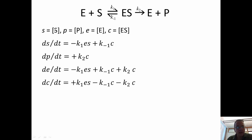So, we're going to refer to concentration of S as little s, concentration of P as p, concentration of E as little e, and then concentration of this complex ES as little c. And so, we can write down differential equations for the rate of change of concentration S, concentration P, concentration E, concentration C as follows.